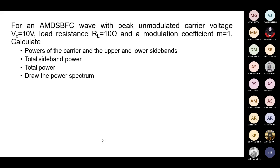Take this problem. A double sideband full carrier wave with peak unmodulated carrier voltage Vc = 10 volt, load resistance RL = 10 ohms, and modulation coefficient M = 1. Calculate the power of the carrier and the upper and lower sidebands, then the total sideband power, total power, and finally draw the power spectrum. Vc and modulation index and load resistance are all given. Calculate the carrier power Pc.